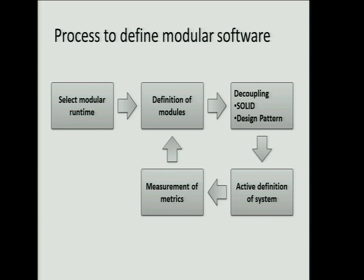The third step is the active definition of the system. You have to actively define which usage types, which software components, and so on — really define how the system should look. This is called the 'to-be picture.' Then you have to measure it: compare the to-be picture with the current architecture implemented in code, apply some metrics, and check whether the architecture fits the implementation. If not, refactor.